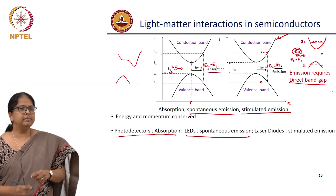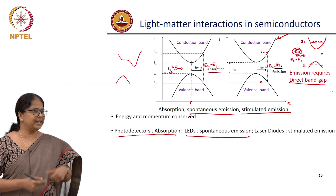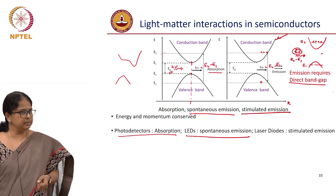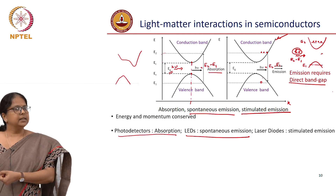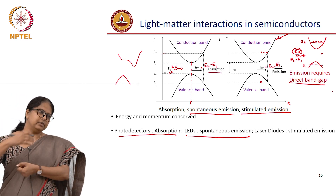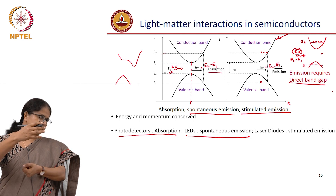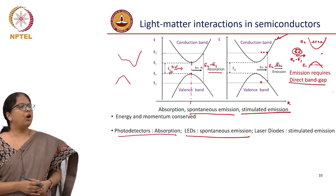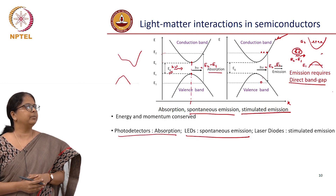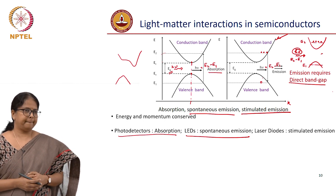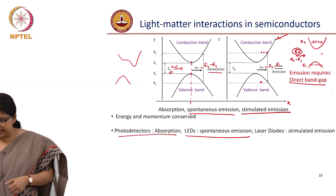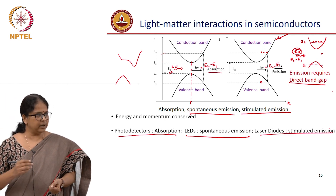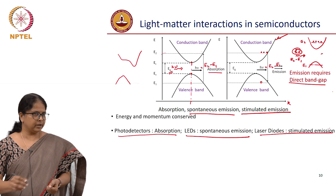LEDs work based on spontaneous emission. You send a current, there is an emission that happens in the system, and that light you extract out. If you send the current in an on-off fashion, the light also comes out in an on-off fashion — that is your on-off keyed signal generated from a directly modulated LED. Whereas laser diodes work based on stimulated emission, and we will talk more about that when discussing laser diodes.